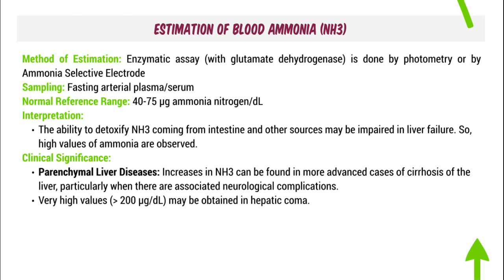Estimation of blood ammonia: method is enzymatic assay with glutamate dehydrogenase, done by photometry or ammonia-selective electrode. Fasting arterial plasma or serum sample is taken. Normal reference range: 40–75 micrograms ammonia nitrogen per deciliter. Clinical significance: in liver failure, the ability to detoxify ammonia from the intestine is impaired — high ammonia values are observed. In advanced cirrhosis with neurological complications (hepatic encephalopathy), very high values (above 200) may be obtained and can lead to hepatic coma.